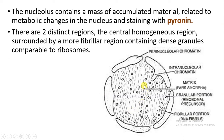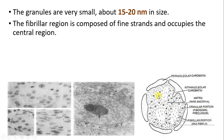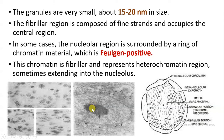In the nucleolus there are two distinct regions. First is the central homogeneous region, which is surrounded by a fibrillar region containing dense granules comparable to ribosomes — these granules are very small, about 15 to 20 nanometers in size. The second is the fibrillar region, which is composed of fine threads and occupies the central region. In some cases the nucleolar region is surrounded by a ring of chromatin material, and this chromatin is fibrillar, representing the heterochromatin region, sometimes extending into the nucleolus.